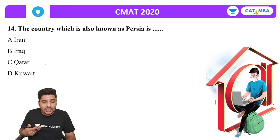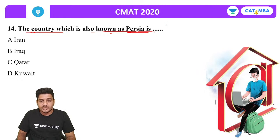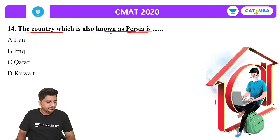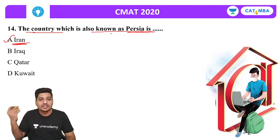Next question: The country which is also known as Persia is which country today? The correct answer is Iran. In our history sessions on Mohammed of Ghori, Mohammed bin Qasim and Mohammed of Ghazni, we discussed how Persia — through the Abbasid, Umayyad and Ottoman caliphates — is today known as Iran.